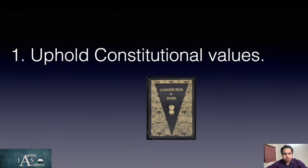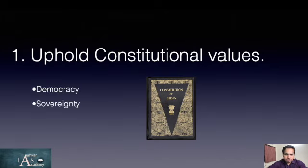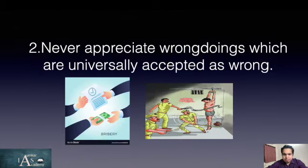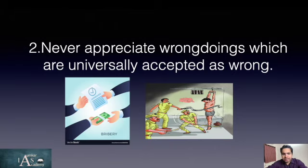The first important point is that we should never abandon constitutional values. You should always uphold constitutional values because as a citizen of our country it is your fundamental duty to respect the constitution. If you are going to be a civil servant, your answer should reflect a democratic attitude. Whenever you propose any solution in your essay it should promote democracy, sovereignty, security and integrity of the nation, and a secular regime. You should never appreciate any wrongdoings that are universally accepted as wrong — for example, you should never propose that taking a bribe is good, because that is universally wrong.